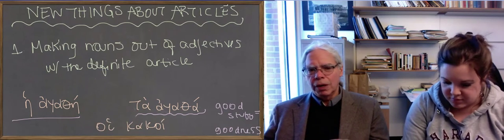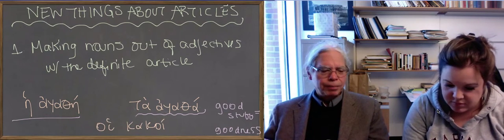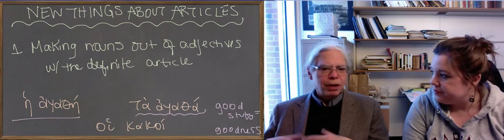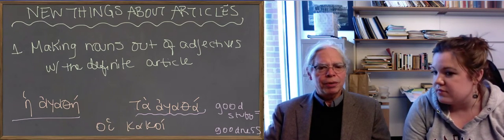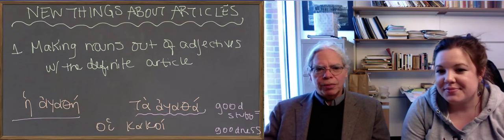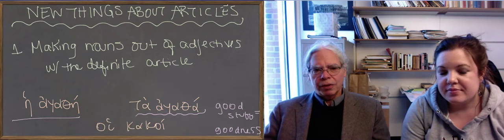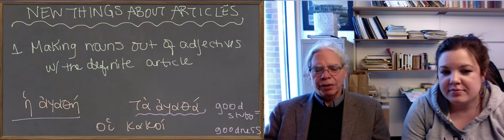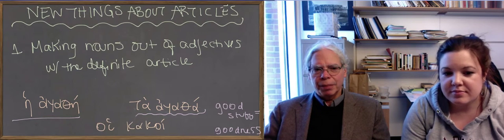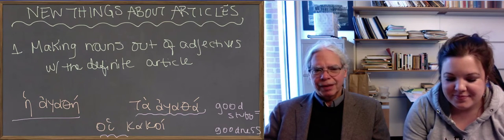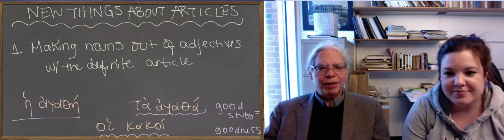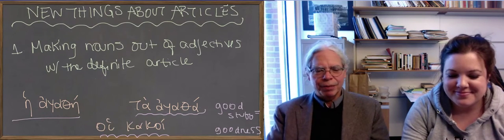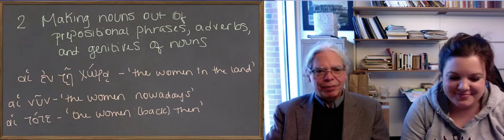Plato prefers the plural more. You can say ta agatha, and that means goodness, that which is good. But you can also do it in the plural, which is, I think, cooler. And then you can have a masculine plural, like hoi kakoi, the bad men. There are plenty of them in Greek. We were talking about the good and the bad today.